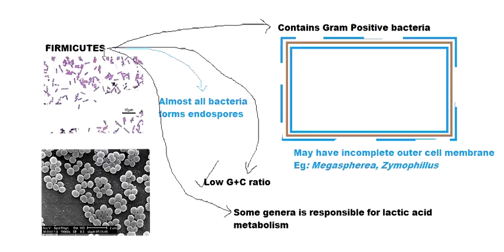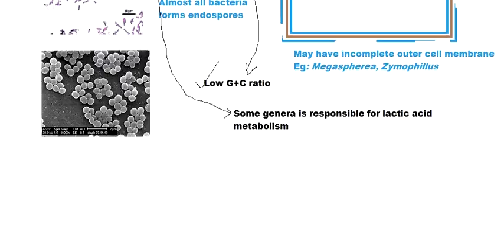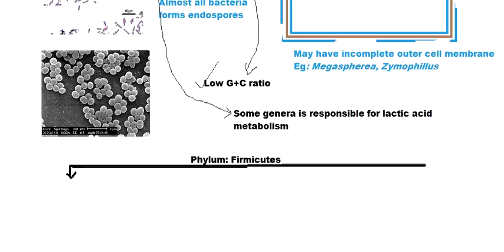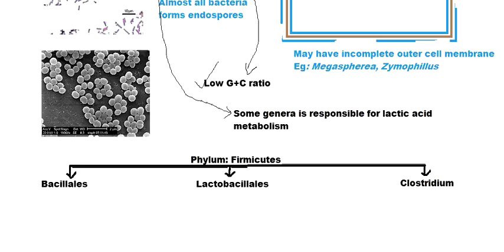Now let us study about the classes in this phylum and also some important genera. In the phylum Firmicutes, there are three important classes — there is one more but it is not that important. The three important classes are Bacillales, Lactobacillales, and Clostridia.